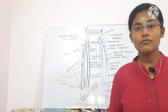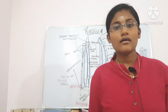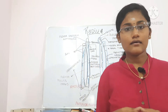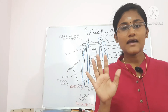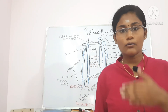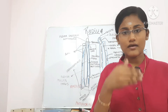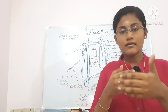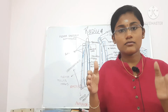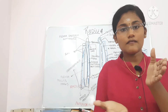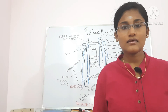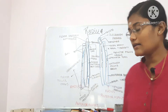Now let's move on to the lower end of the radius. The lower end is the widest of all three parts and has five surfaces: the anterior surface over the front, the posterior surface over the back, the lateral surface over the side, the medial surface towards the middle, and the inferior surface on the bottom.